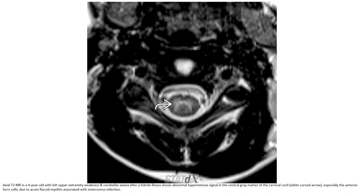This is a T2 MRI of the spine in a four-year-old with left upper extremity weakness and cerebellar ataxia after a febrile illness. The image shows abnormal hyperintensity in the central gray matter of the cervical cord, especially the anterior horn cells, due to acute flaccid myelitis associated with enterovirus infection.